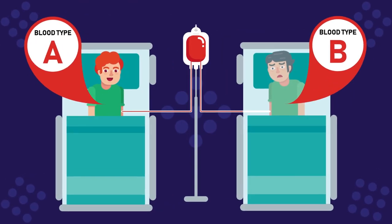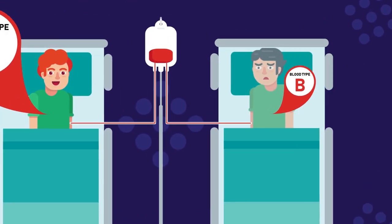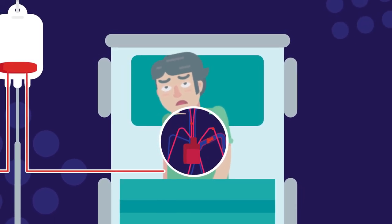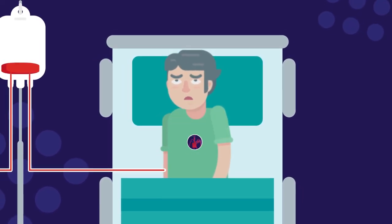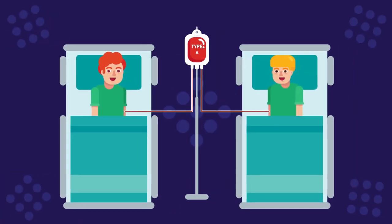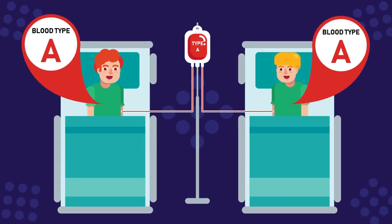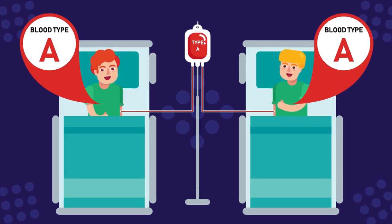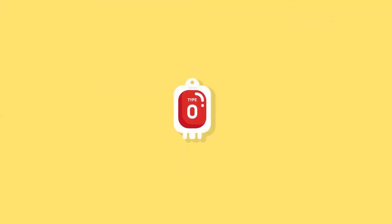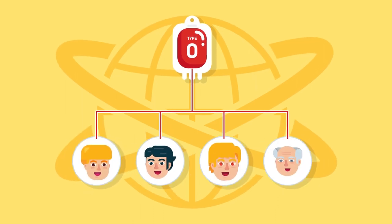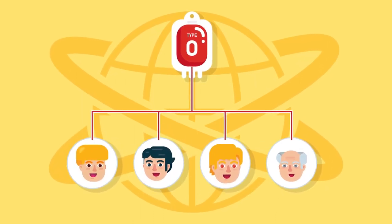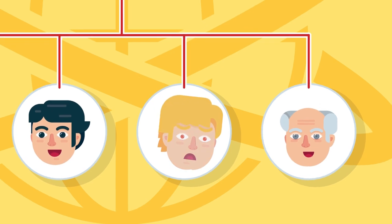If the blood types are not compatible, red blood cells will clump together, making clots that can block blood vessels and cause a potentially fatal situation. Therefore, it is important that blood types are matched before transfusions take place. In an emergency, type O blood can be given because it is most likely to be accepted by all blood types; however, there is still a risk involved.